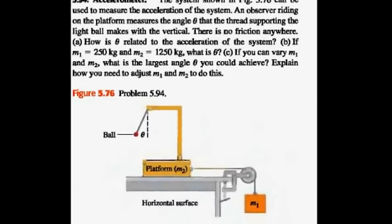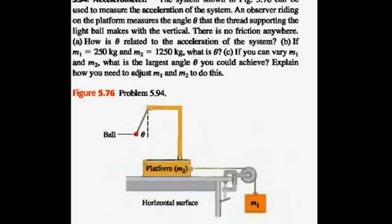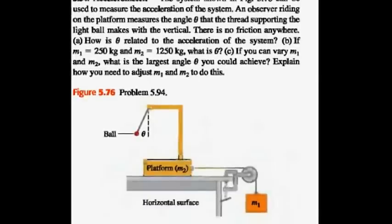The system shown in figure 5.76 can be used to measure the acceleration of the system. An observer riding on the platform measures the angle theta that the thread supporting the light bulb makes with the vertical. There is no friction anywhere. Part A: How is theta related to the acceleration of the system? Part B: If M1 equals 250 kg and M2 equals 1250 kg, what is theta? Part C: If you can vary M1 and M2, what is the largest angle theta you could achieve? Explain how you need to adjust M1 and M2 to do this.